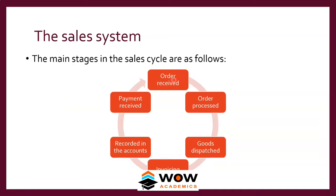Now let's look at how the sales cycle works. The customer gives an order, we process the order, then we check whether the customer is reliable. For cash sales we can process directly. For credit sales, we check the records for any pending dues. If there isn't much of a pending balance, we can process the sale. We then send the invoice copy to the warehouse, which sends the goods and bill to the customer. Once the customer acknowledges receipt, it is recorded in accounts and payment is received.